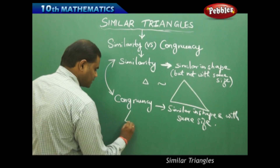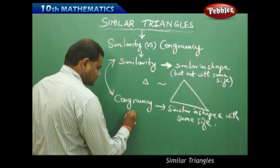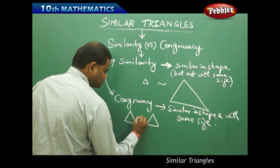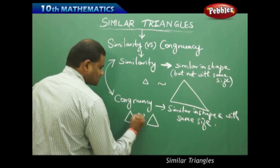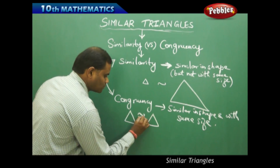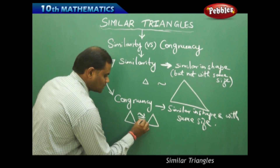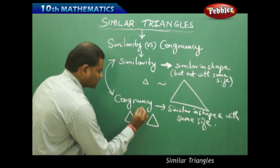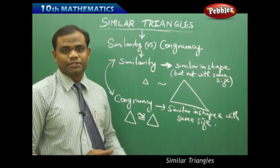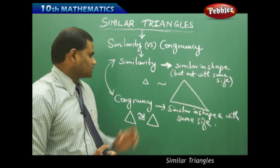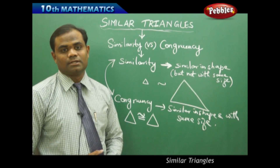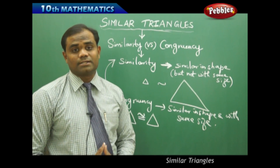For example, I take triangles. These two are said to be congruent, denoted by the congruence symbol, while similarity is denoted by the similarity symbol. They are congruent if they are equal in size and similar in shape. But they are similar in shape but not equal in size — that is how we understand the difference between similarity and congruency.